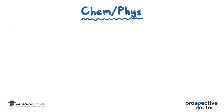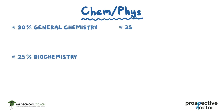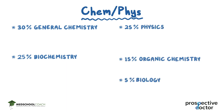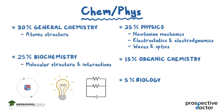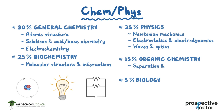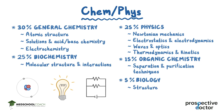Let's go section by section. The Chem-Phys section consists of 30% General Chemistry, 25% Biochemistry, 25% Physics, 15% Organic Chemistry, and 5% Biology. Topics in this section include Newtonian Mechanics, Electrostatics and Electrodynamics, Waves and Optics, Atomic Structure, Molecular Structure and Interactions, Solutions and Acid-Base Chemistry, Electrochemistry, Separation and Purification Techniques, Thermodynamics and Kinetics, and the Structure, Function, and Reactivity of Biologically Relevant Molecules.